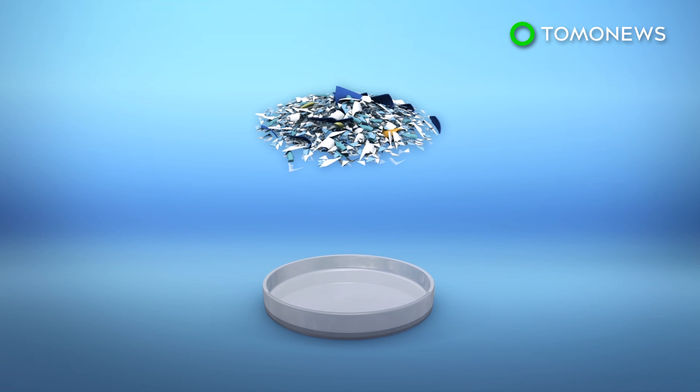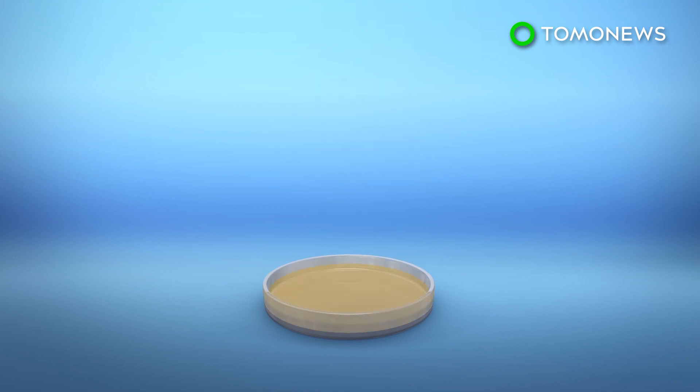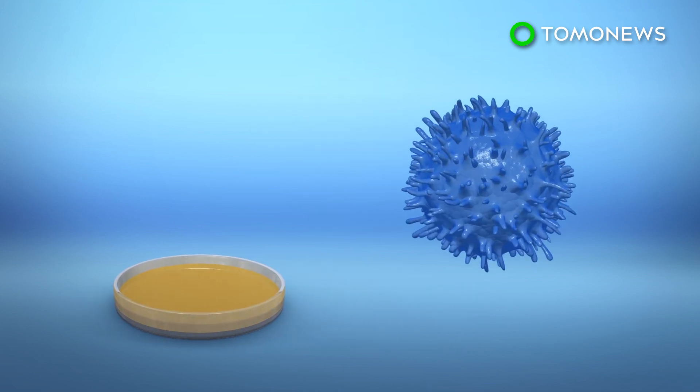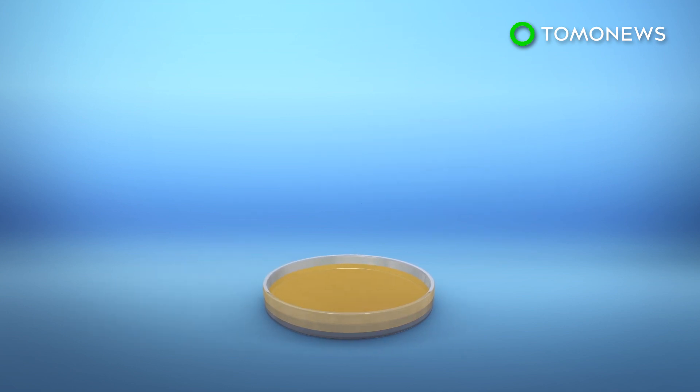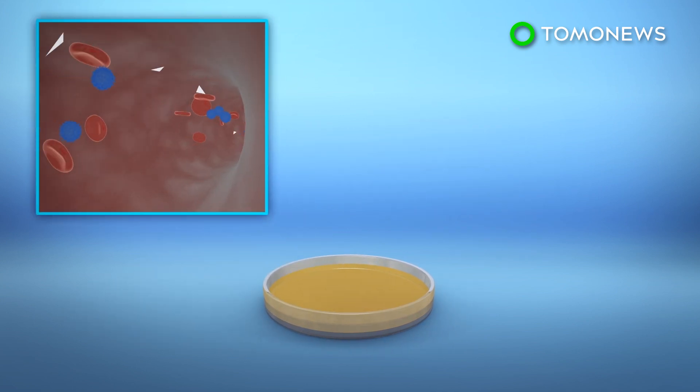To test the microplastics and immune cells, researchers put microplastic particles of different sizes in a petri dish along with immune cells and blood plasma. The experiment found that smaller microplastics were not recognized as intruders by the immune cells and were therefore left untouched.